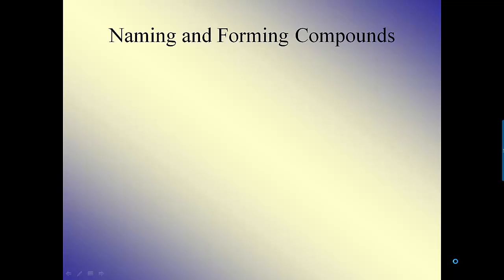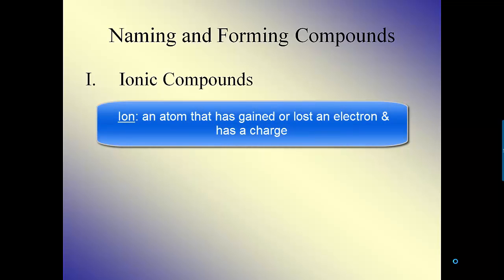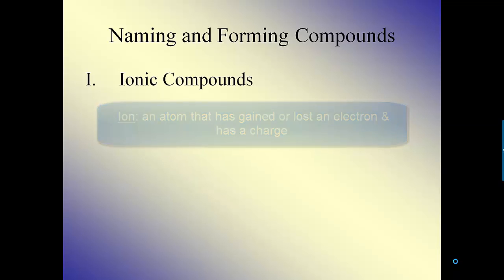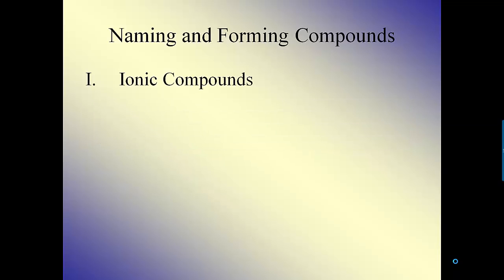So let's tackle the naming of ionic compounds because that's the easiest thing that we can do. What is an ionic compound? You have to remember what an ion is first. We talked about what electrons do, and electrons are in charge of ions. An ion is any atom that has either gained or lost electrons, and because of that, it now has a charge. So it can attract other things — positive ions will attract negative ions, sort of like positive and negatives of a magnet.